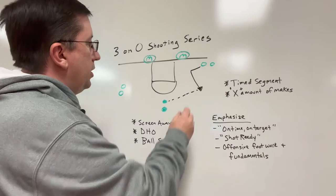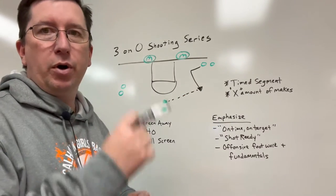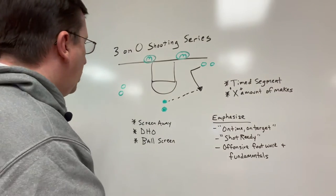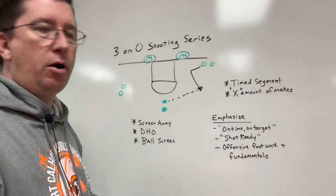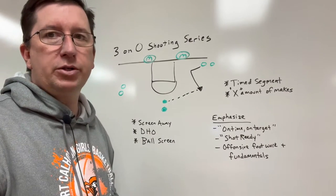So the ball is swung to the wing here and we're facing up, we call it a Nova Rip, we're squaring up, we're finding the rim. We're working on three different actions within our offense. We're working on screen aways, we're working on dribble handoffs, or we're going ball screens.